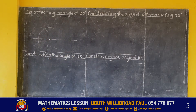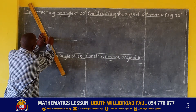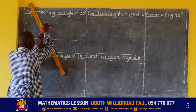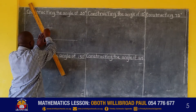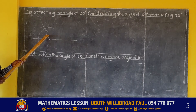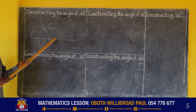That angle that we have constructed — when we join — we have two angles, which we learned in our previous lesson. We have two angles formed: the angle of 60 degrees, and the angle of 120 degrees.